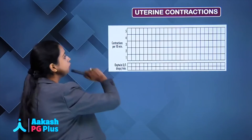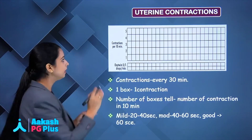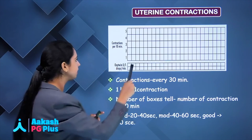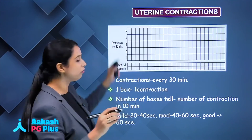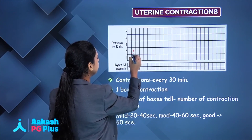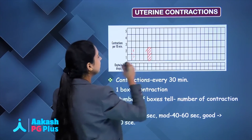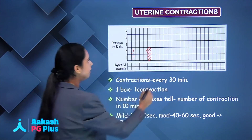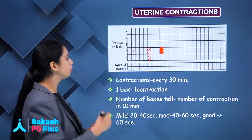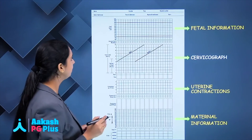Now, uterine contractions on the partogram: each small box represents 30 minutes. The number of boxes coloured tells you how many contractions there are in 10 minutes. For intensity: dots mean less than 20 seconds — weak contractions; lines mean 20 to 40 seconds — moderate intensity; fully coloured boxes mean more than 40 seconds — strong contractions. Along with this, you can mark oxytocin if it is being used.